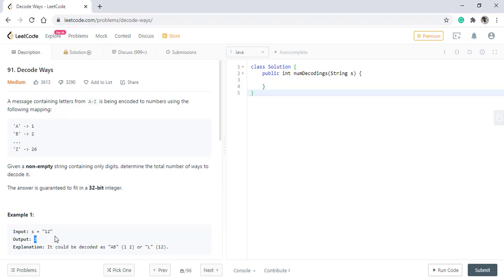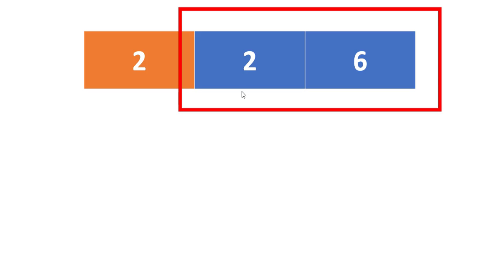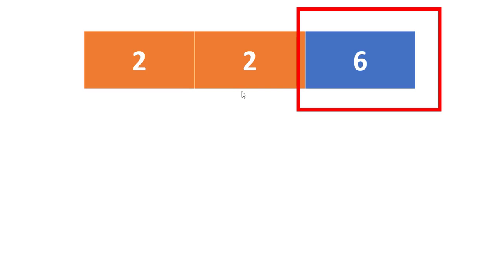Let's see how we can solve this problem. This is the second example given to us — we need to find the number of ways to decode this string. We start with the first value, that is 2. Taking this 2, we find the ways to decode the rest of the string, that is 26. Similarly, we take the first two values 22 and see how many ways 6 can be decoded. Since 6 is only one letter, there is only one combination. Also, an empty string is decoded in one way.